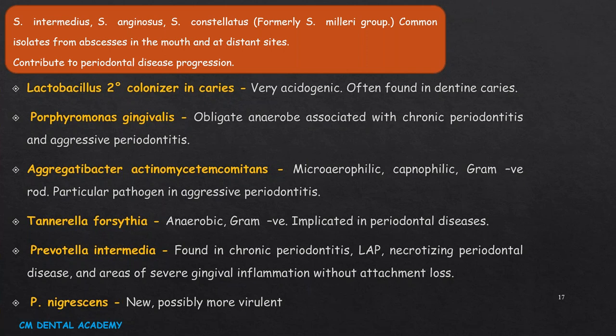Key bacteria and their associated diseases: Aggregatibacter actinomycetemcomitans is microaerophilic, capnophilic, gram-negative rod — a particular pathogen in aggressive periodontitis. Tannerella forsythia are anaerobic gram-negative bacteria implicated in periodontal disease. Prevotella intermedia is found in chronic periodontitis, localized aggressive periodontitis, necrotizing periodontal disease, and areas of severe gingival inflammation without attachment loss. Prevotella nigrescens is a newer form detected and appears more virulent. Capnophilic microorganisms thrive in the presence of high concentrations of carbon dioxide.